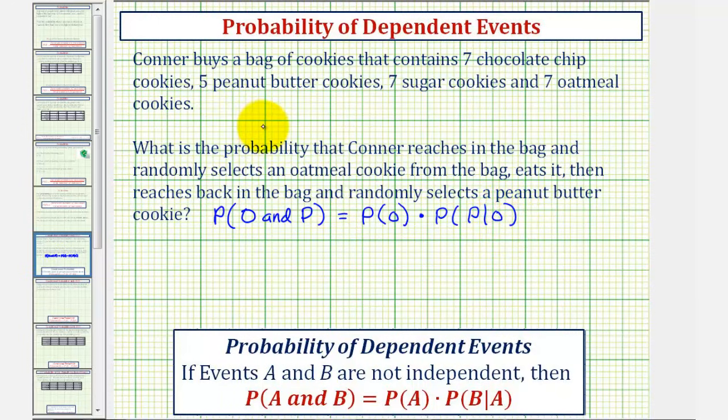Let's begin by determining the total number of cookies. It would be seven plus five plus seven plus seven, which equals 26.